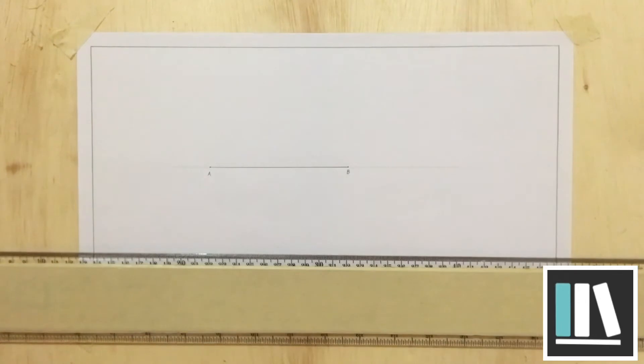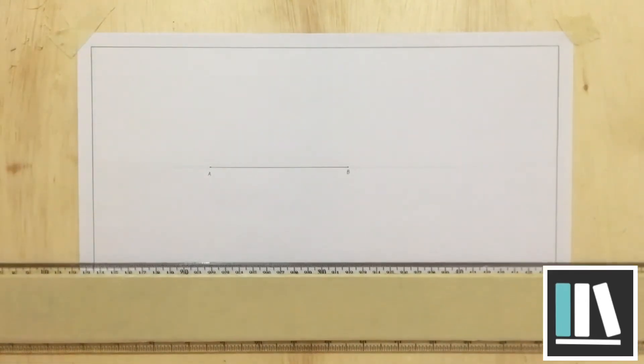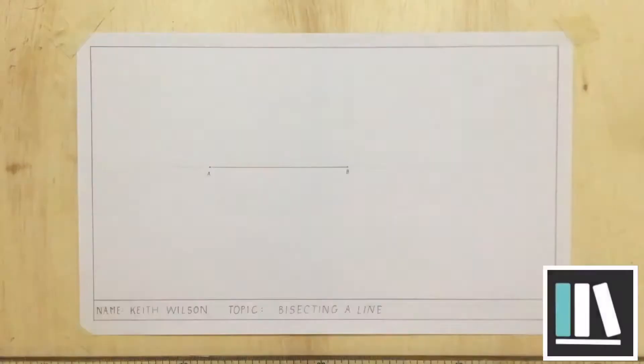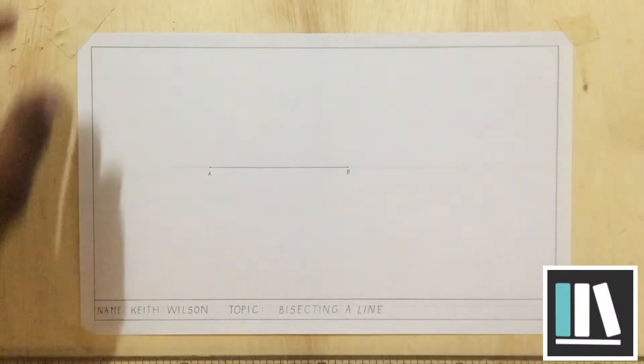Now, we can go ahead and bisect this line. In bisecting this line, we will need our compass.